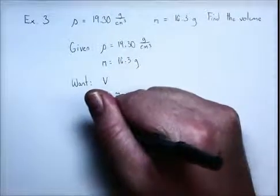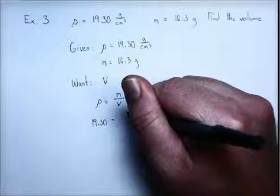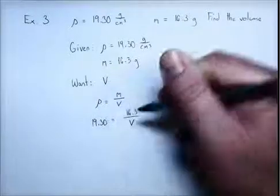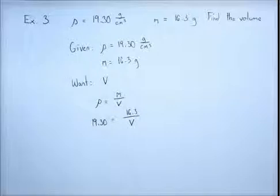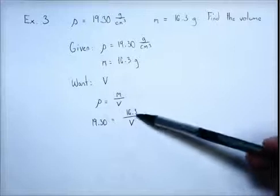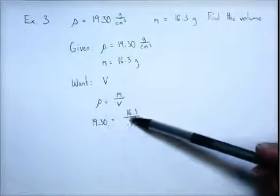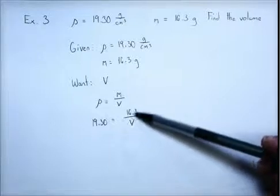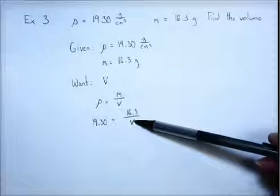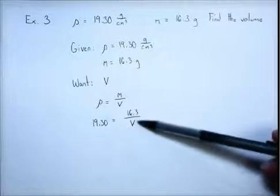Plug in numbers we know. 19.30 equals 16.3 over the volume. And here you have to be really, really careful. Because people have a tendency to see this math problem and to take 16.3 and multiply both sides by that. That is not how you would solve this. If you think back to example two, here we've got 16.3 divided by the volume. We're wanting to get that volume by itself, but it's not clear exactly how to do it from here.